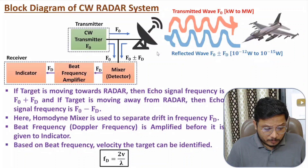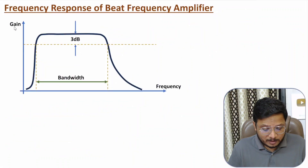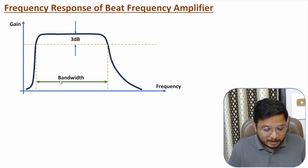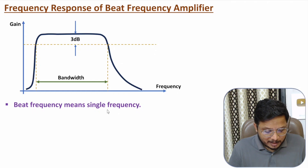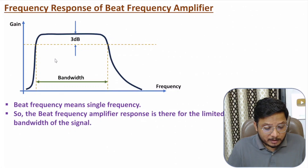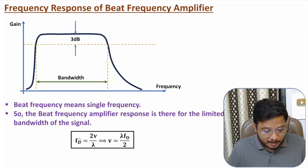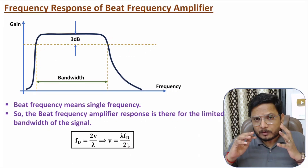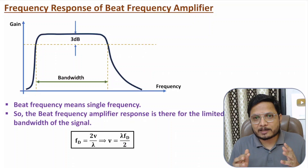Now I will explain the frequency response of the beat frequency amplifier. On the Y axis we have gain and on the X axis we have frequency. The response has a limited bandwidth — from a lower frequency to some upper frequency. The reason is that the beat frequency amplifier amplifies a single frequency only. So we will have limited bandwidth in the frequency response. Once we amplify this signal, we get frequency Fd, and based on Doppler's effect, velocity can be calculated as lambda times Fd divided by 2. That is how the complete block diagram and working of the CW radar system operates. I hope you have understood this; please note any questions in the comment section. Thank you for watching.